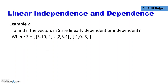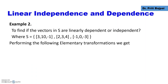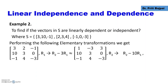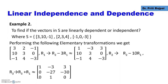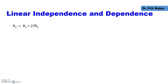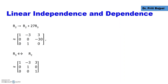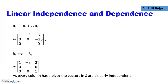Let's take another example with a subset S from R3. After performing elementary row transformations by writing the vectors as columns, the final matrix in row echelon form is: 1 1 -3 | 3 0 1 | 0 0 0 | 0 0 1. We can see every column has a pivot, so the subset S is linearly independent.